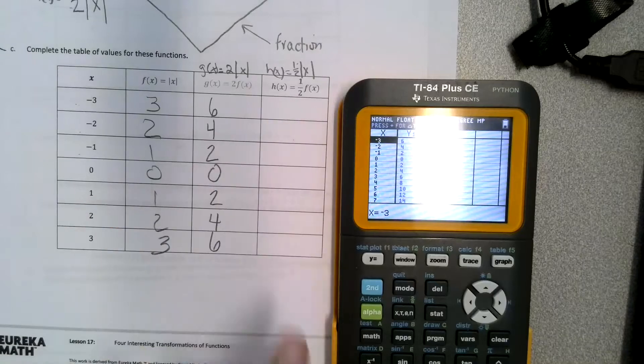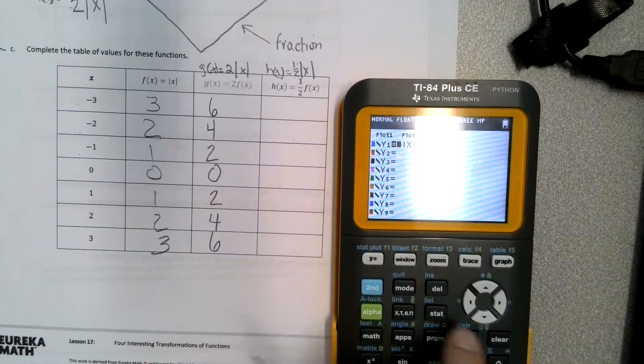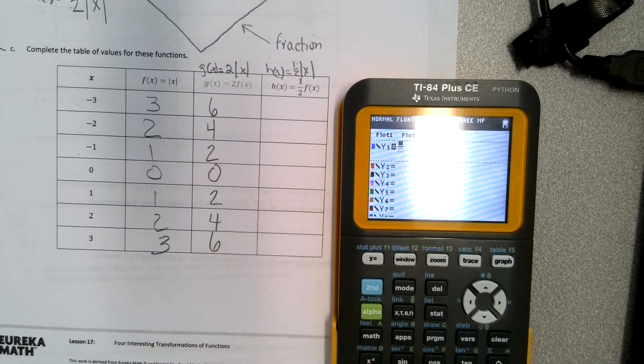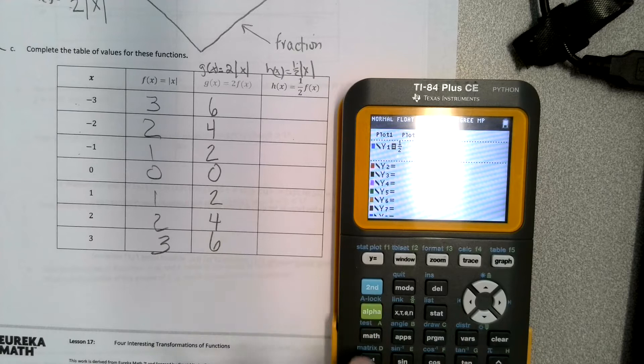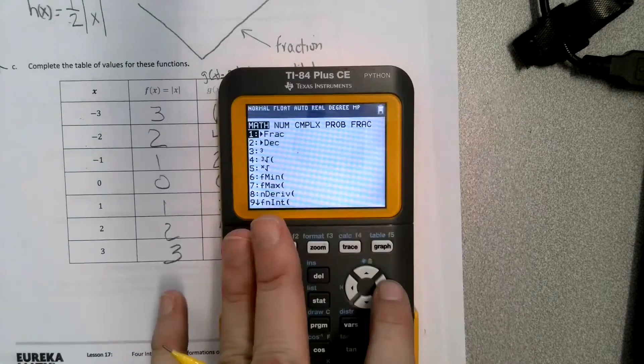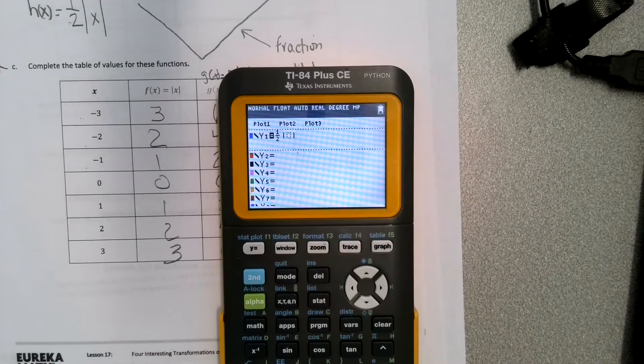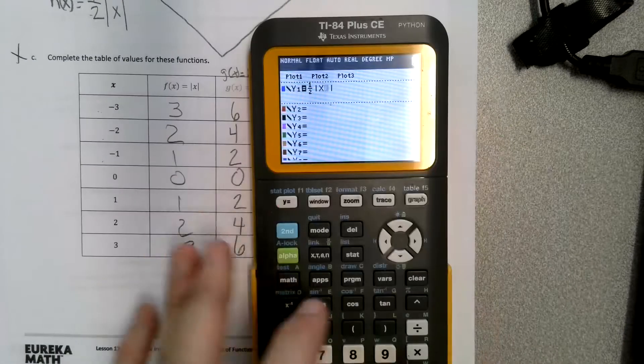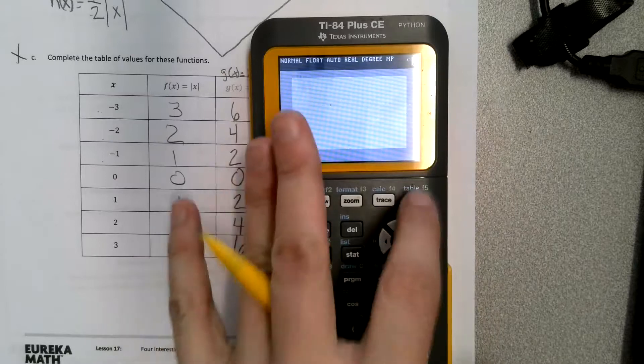Alright, so we're going to continue this one. We're going to clear that out. We're going to do alpha X and get 1 over 2, arrow over, math, num, abs, and then we're going to put an X inside, arrow out, graph.